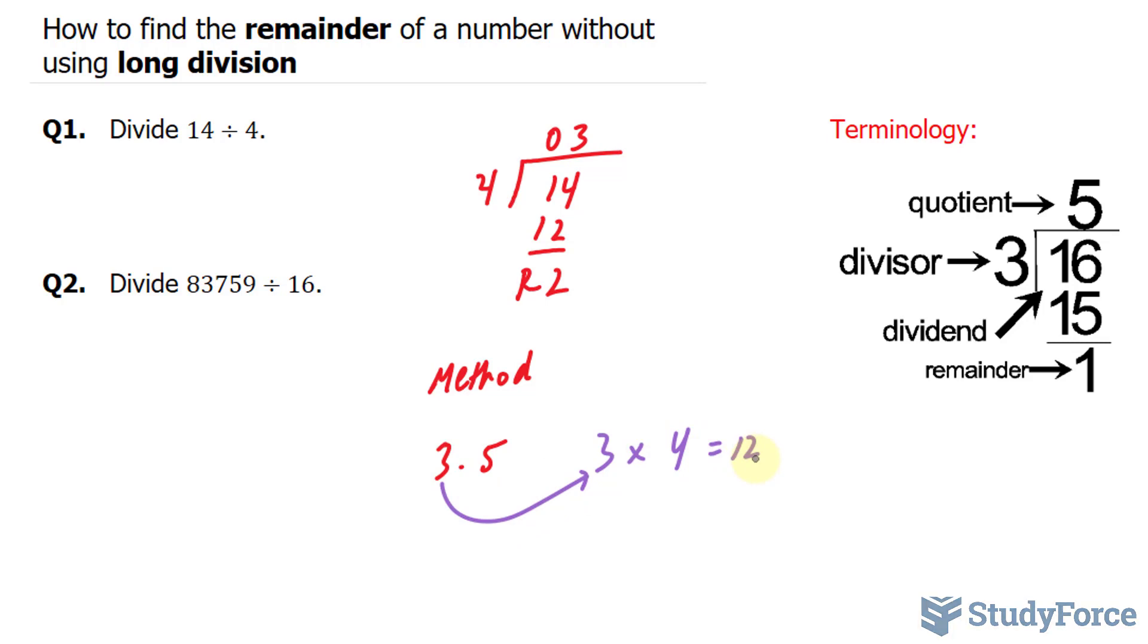You then take this number 12 and subtract it by the dividend, which is, in our case, 14. 14 minus 12 is equal to 2. So that's the first method.